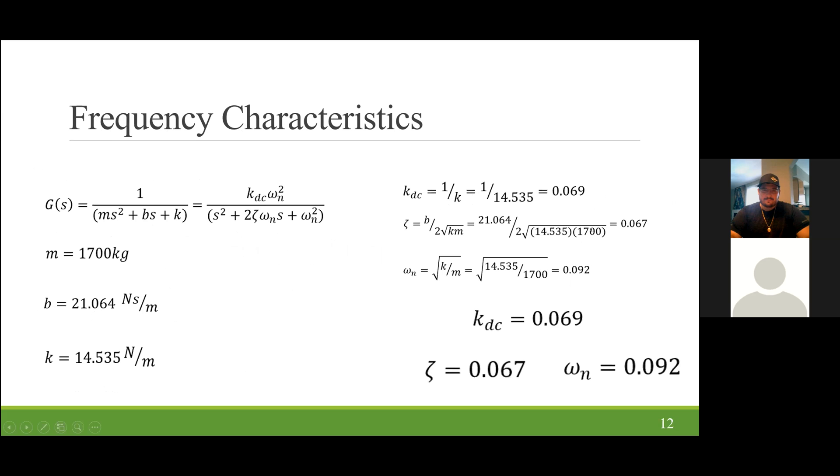Following our transfer function, we can also find our frequency characteristics. As you can see, our transfer function, g of s, is equal to kdc w n squared over s squared plus 2 zeta natural frequency s plus w n squared. And the reason why we can use this is because at the end, our zeta is equaled out to under 1. In order to calculate for our dc gain, zeta, and natural frequency, we will need to use our m, b, and k values, which we're either given or calculated previously. After plugging them into the equations on the right, we achieve a dc gain of 0.069, a zeta of 0.067, and a natural frequency of 0.092.